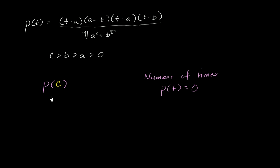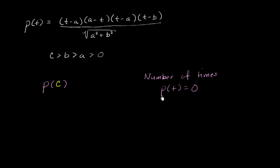Given that information, we have two statements to compare. On the left-hand side, we have the position at time c. On the right-hand side, we have the number of times that p of t is equal to 0. Pause the video and think about which of these provides a larger value — is p of c greater than or less than the number of times p of t equals 0 — or maybe you don't have enough information, or maybe they're equal.